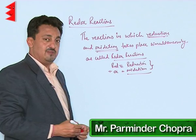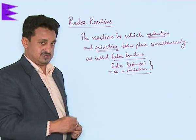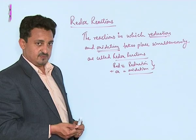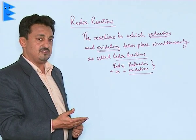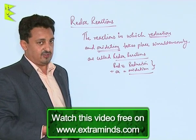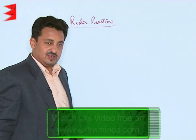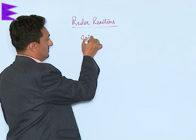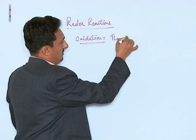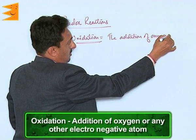These two processes always take place simultaneously in a particular reaction or process, and that is why such processes or reactions are called redox reactions. In order to understand redox reactions completely, we need to first understand what exactly reduction and oxidation are. Let us take oxidation first.